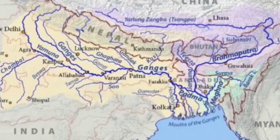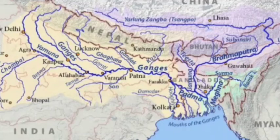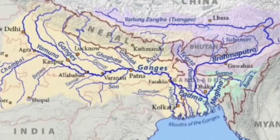The Ganga river finally joins the Bay of Bengal through Bangladesh. Similarly, the Brahmaputra river also finally joins the Bay of Bengal through Bangladesh. These two rivers — Ganga and Brahmaputra — merge in Bangladesh, where the combined river water is known as the Padma river, which finally joins the Bay of Bengal.